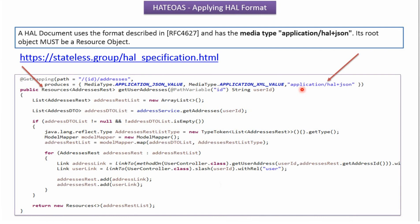To support HAL format in the existing code we have to do two changes. The first change is the method must produce application/hal+json — this media type we have to include in the produces attribute. The second change is the method should return a resource object, and this resource belongs to the HATEOAS package, because the root object must be a resource object.